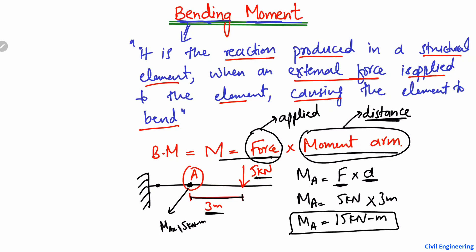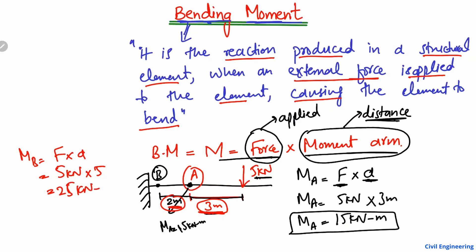For example, if you want to find the bending moment at point B, and the distance from the load to B is 2 meters, while the total distance is 3 plus 2 equals 5 meters — so the moment arm is 5 meters. The moment at point B will be equal to force 5 kilonewtons into moment arm 5, so we get 25 kilonewton meters.